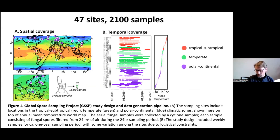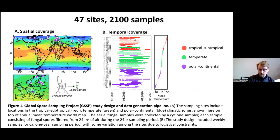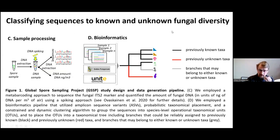The colors of the dots on the map classify sites into major climatic zones: tropical, subtropical, temperate, or polar continental. In total we have 2,100 samples — a bit more than 50 per site — so on average about one year of weekly samples per site. This data has been processed through a metabarcoding approach using the fungal ITS marker for sequencing. We also applied a spiking approach so we can quantify the amount of fungal DNA in nanograms per cubic meter of air.